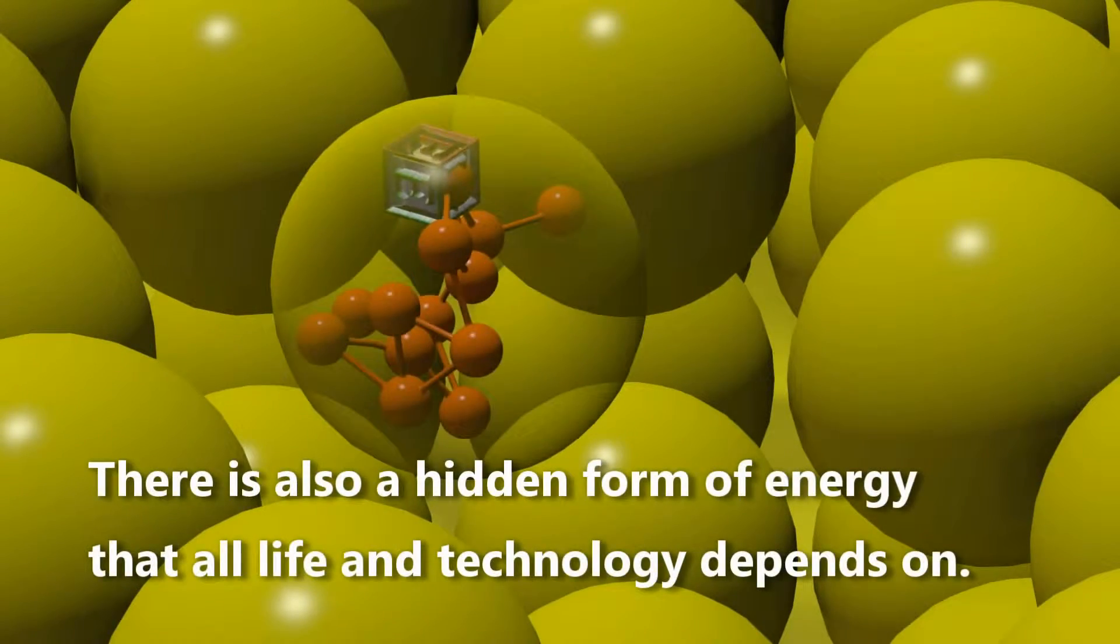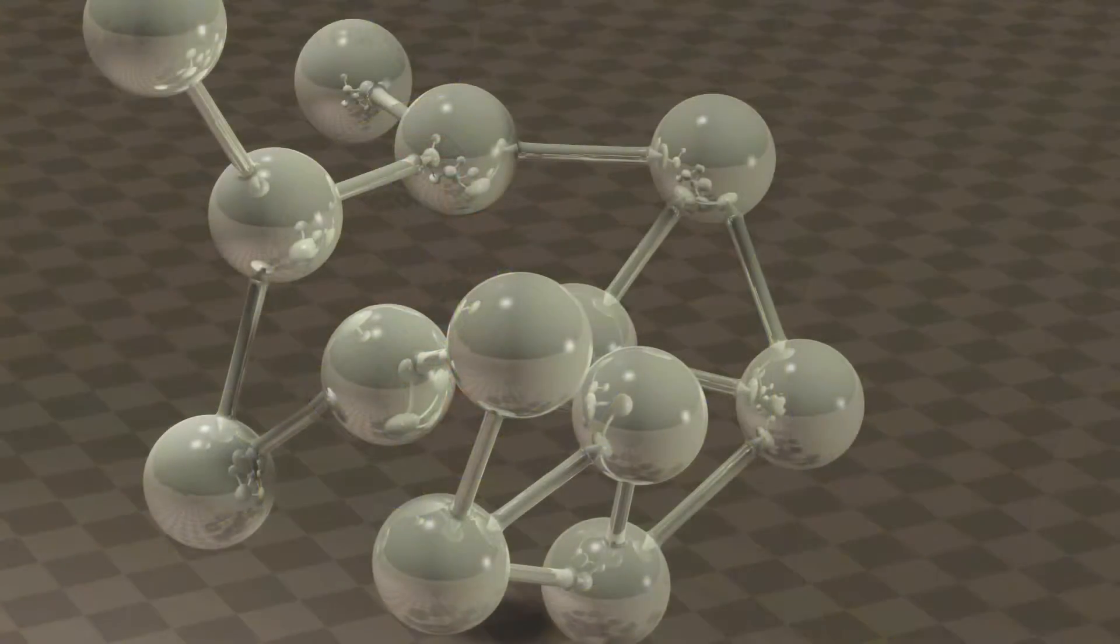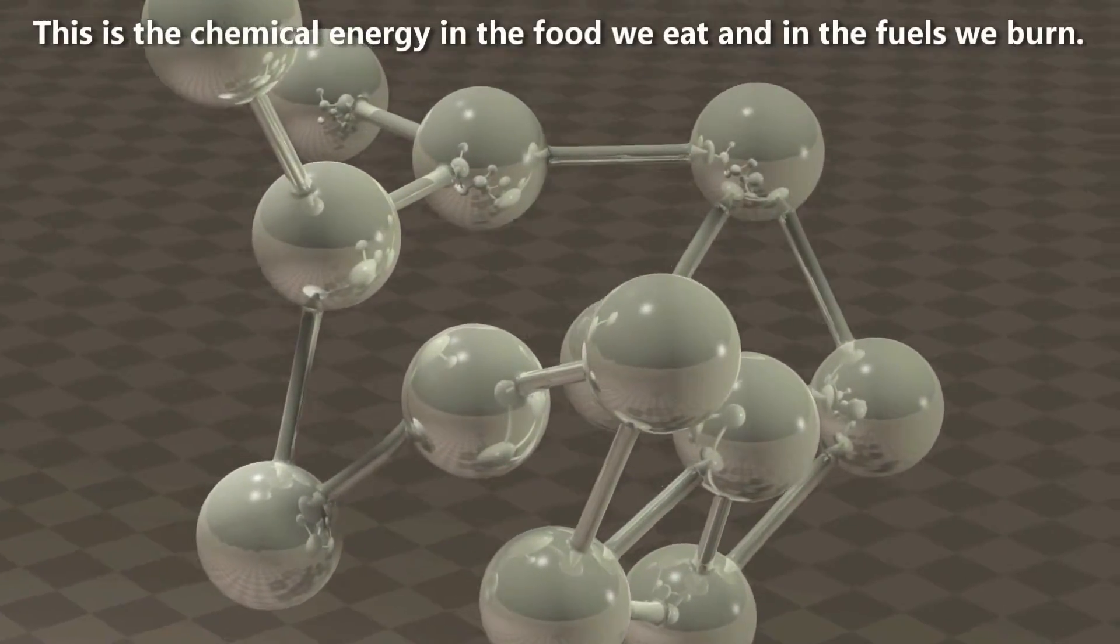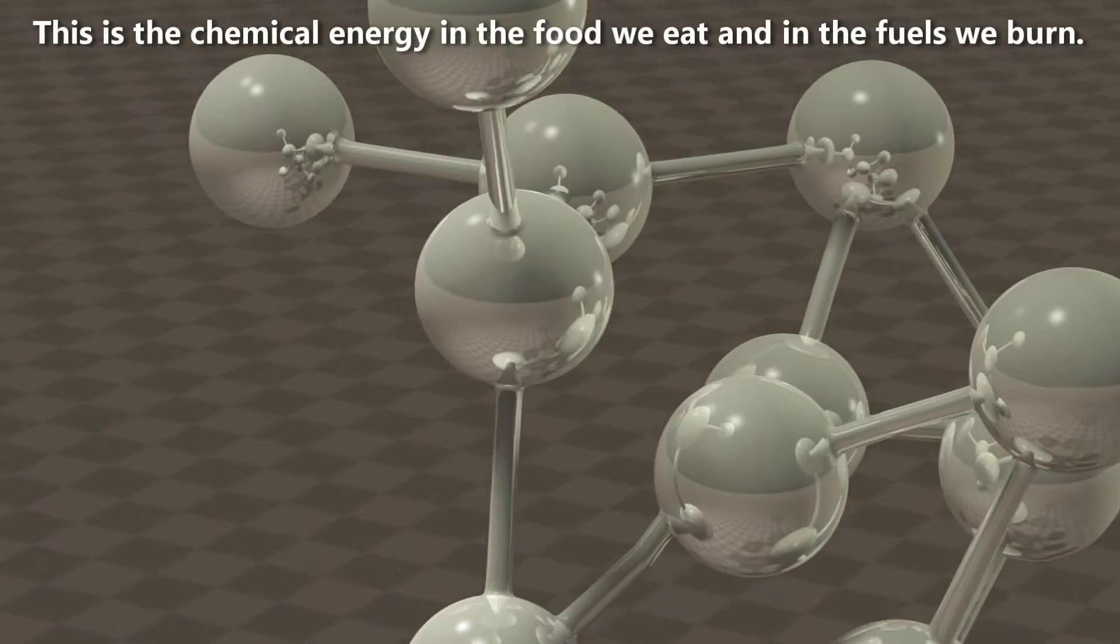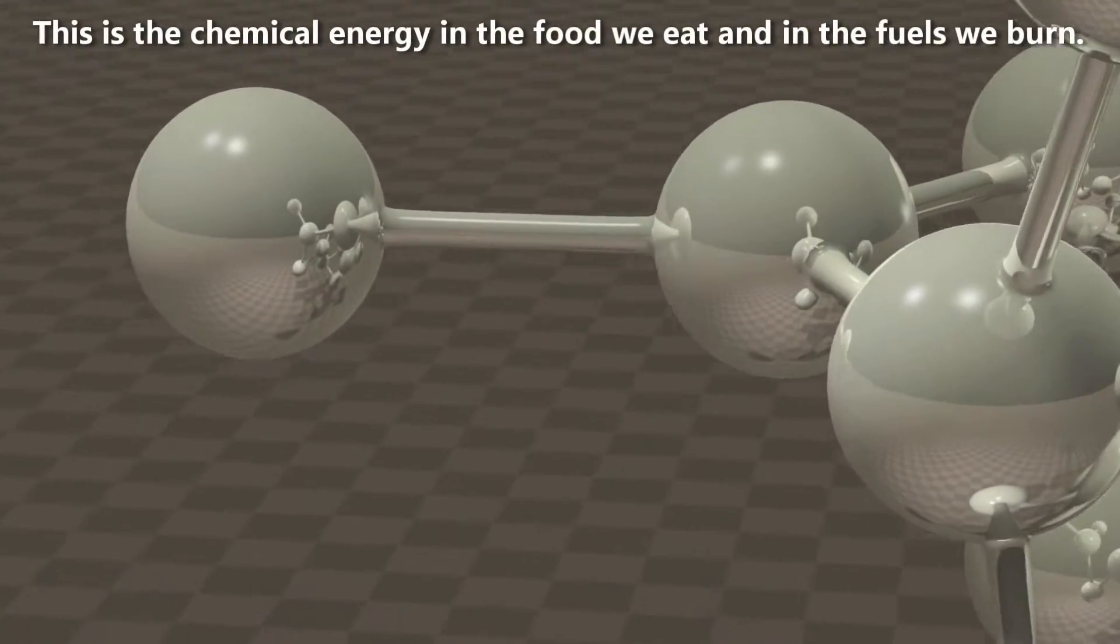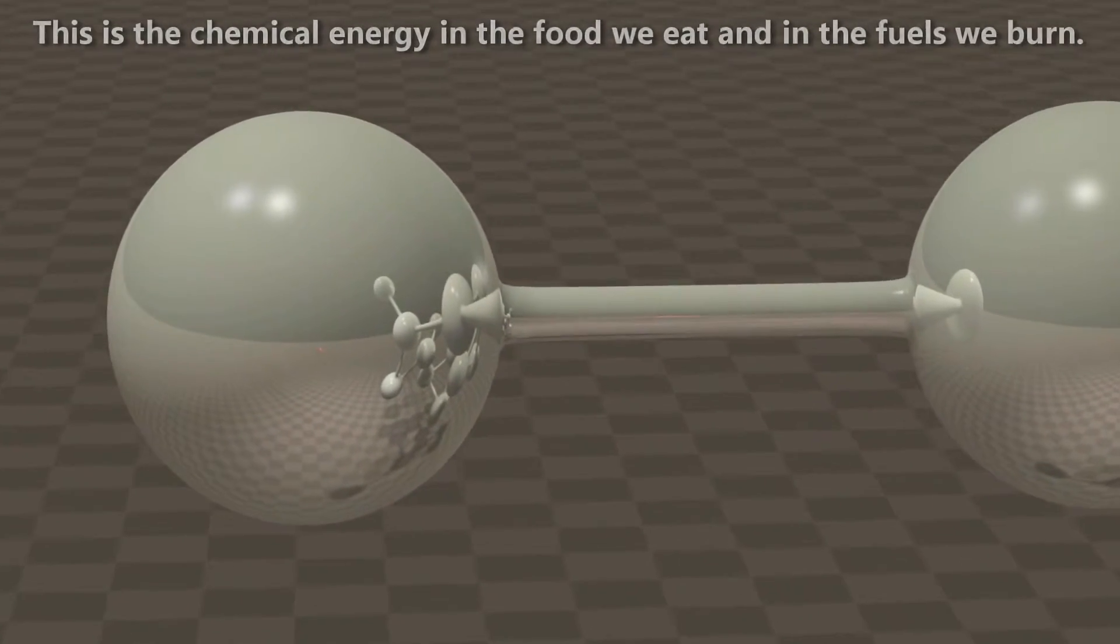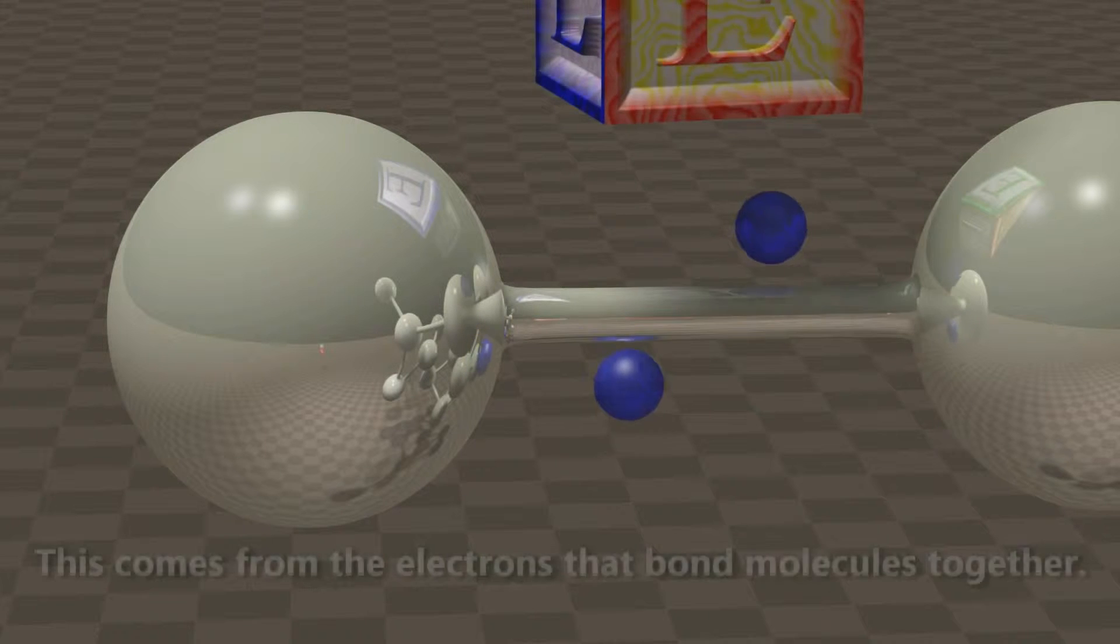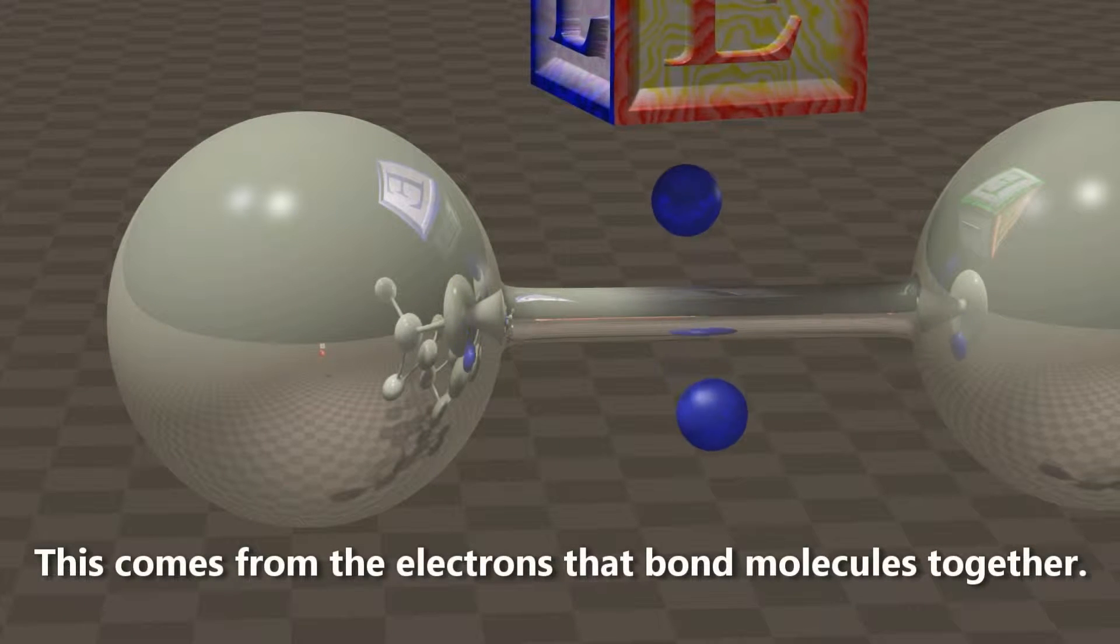There is also a hidden form of energy that all life and technology depends on. This is the chemical energy in the food we eat and in the fuels we burn. This comes from the electrons that bond molecules together.